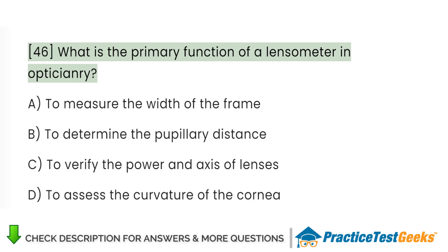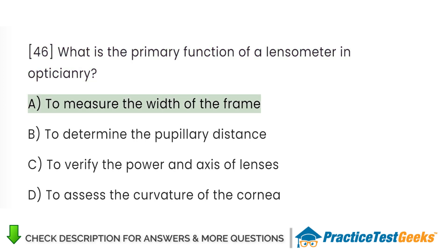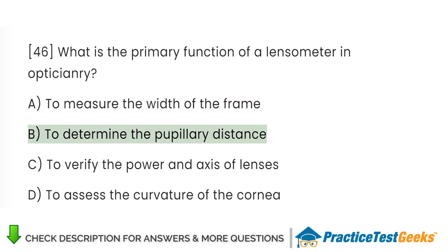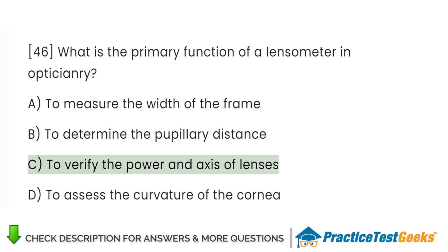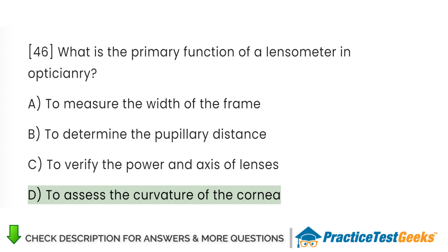What is the primary function of a lensometer in opticianry? A. To measure the width of the frame. B. To determine the pupillary distance. C. To verify the power and axis of lenses. D. To assess the curvature of the cornea.